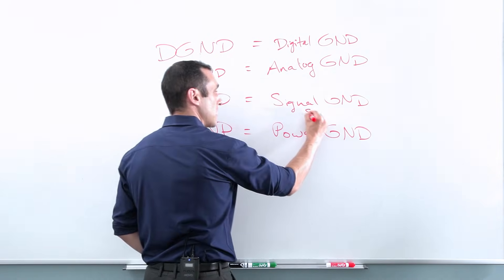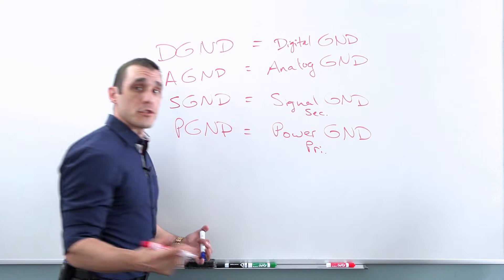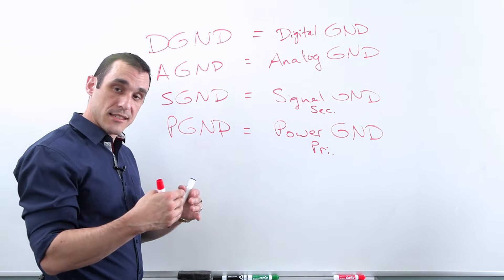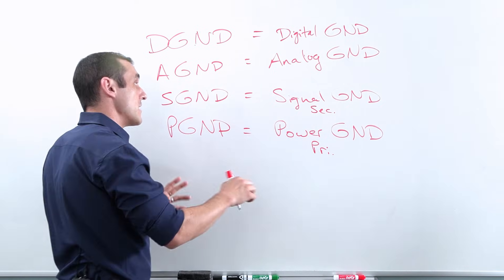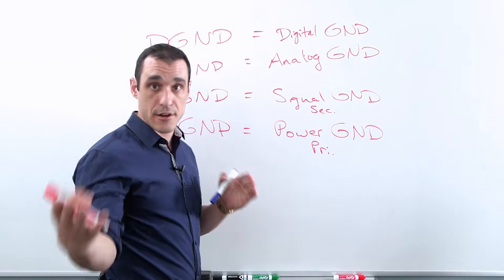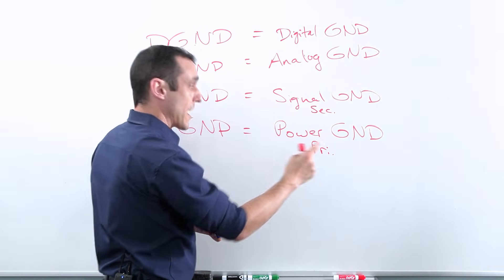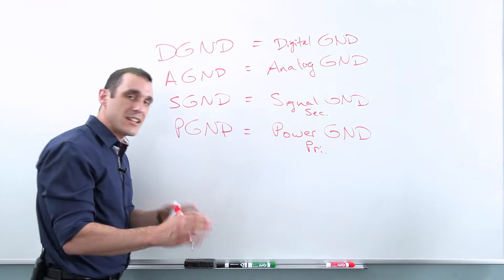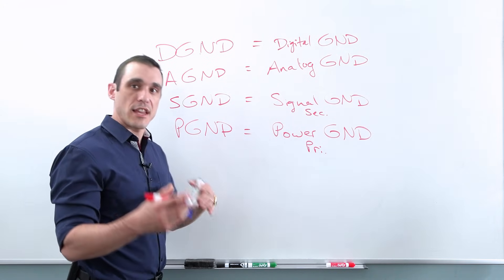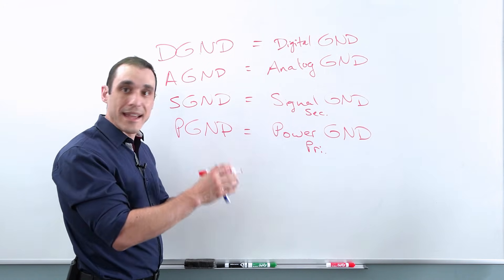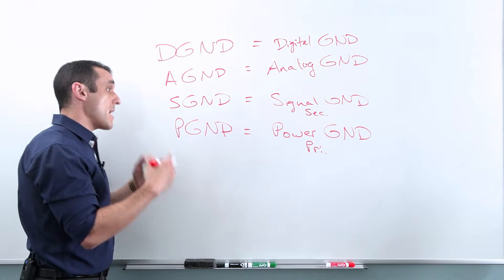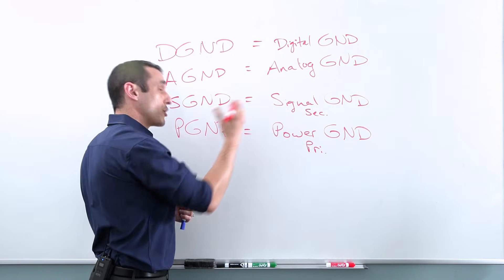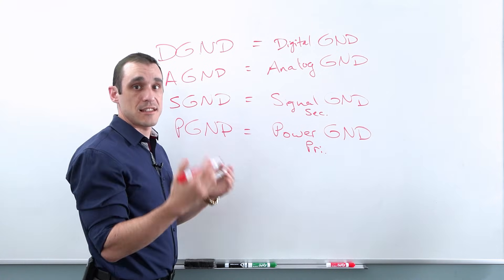However, these designations could also mean something different. In the context of an isolated power converter, S could mean secondary and P could mean primary — referring to the primary and secondary sides of the package. So these are just some of the different ground naming schemes you will see in your component data sheets, depending on the component. These are usually components that have an analog input or require a dedicated, quiet analog power supply, like controllers for a DC-DC converter, especially integrated circuits with an isolated DC-DC converter block.